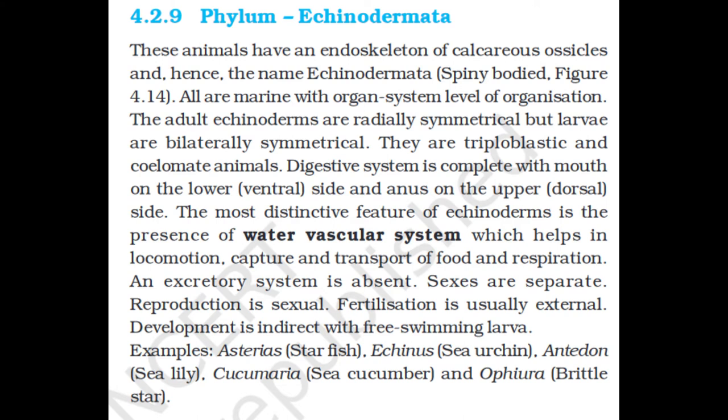Section 4.2.9: Phylum Echinodermata. These animals have an endoskeleton of calcareous ossicles — hence the name Echinodermata (spiny body). All are marine with organ system level of organization. Adult echinoderms are radially symmetrical but larvae are bilaterally symmetrical. They are triploblastic and coelomate animals. The digestive system is complete with the mouth on the lower ventral side and anus on the upper dorsal side. The most distinctive feature is the presence of a water vascular system, which helps in locomotion, capture and transport of food, and respiration. An excretory system is absent. Sexes are separate; reproduction is sexual; fertilization is usually external; and development is indirect with free-swimming larvae. Examples: Asterias (starfish), Echinus (sea urchin), Antedon (sea lily), Cucumaria (sea cucumber), and Ophiura (brittle star).